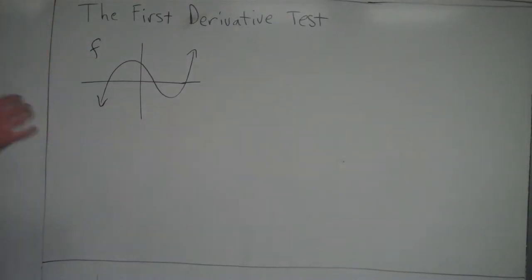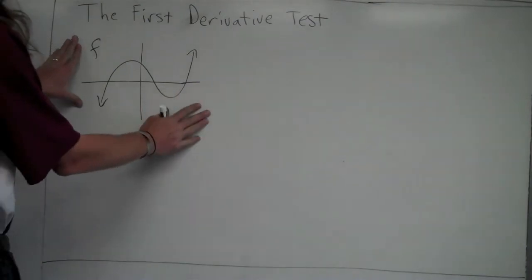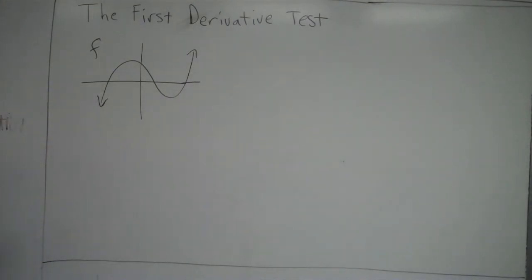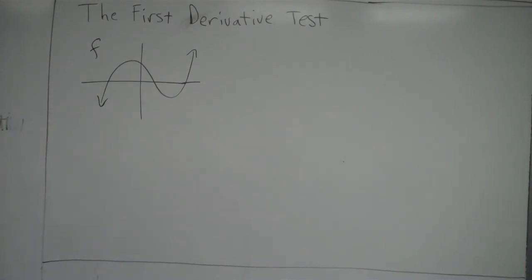We're going to take a look at what the first derivative tells us about a graph. This is a conceptual overview. So let's say here's a function f of x. The first derivative, as we've talked about before, is a general rule for the slope of a function. There are some terms I'm going to use that you need to be very familiar with.